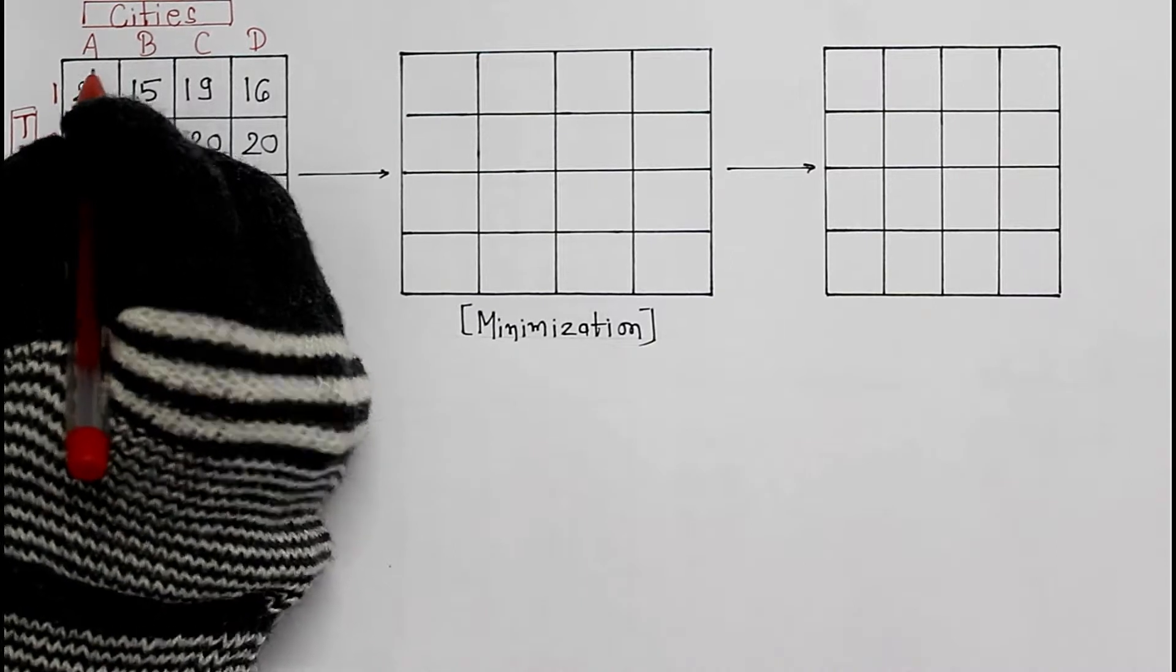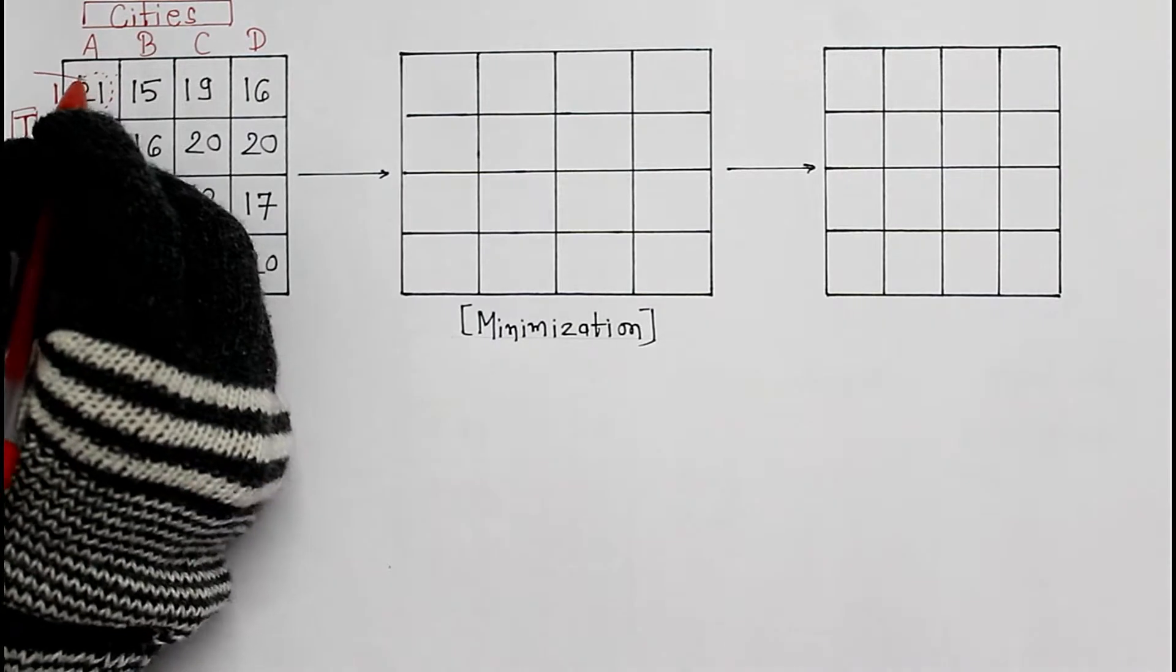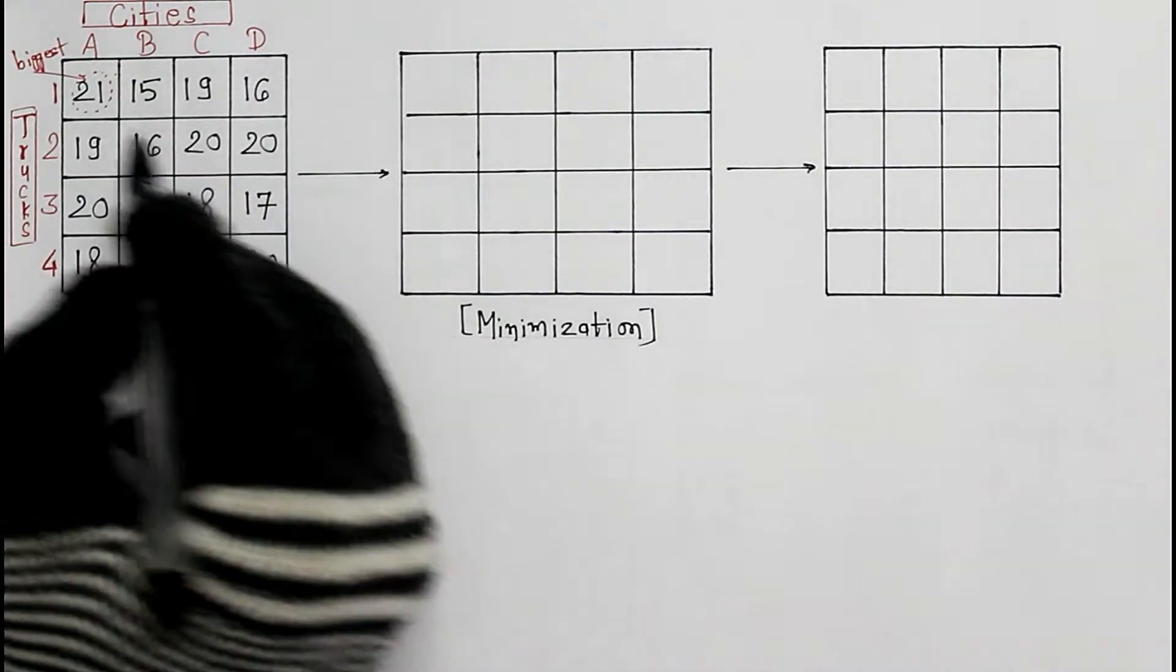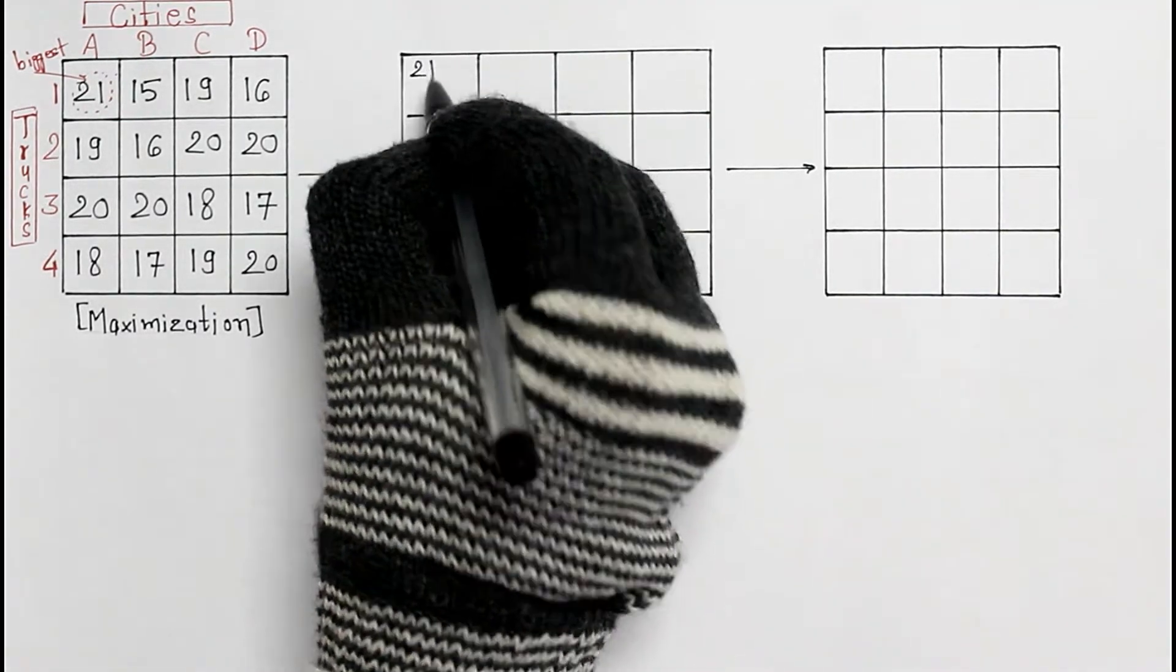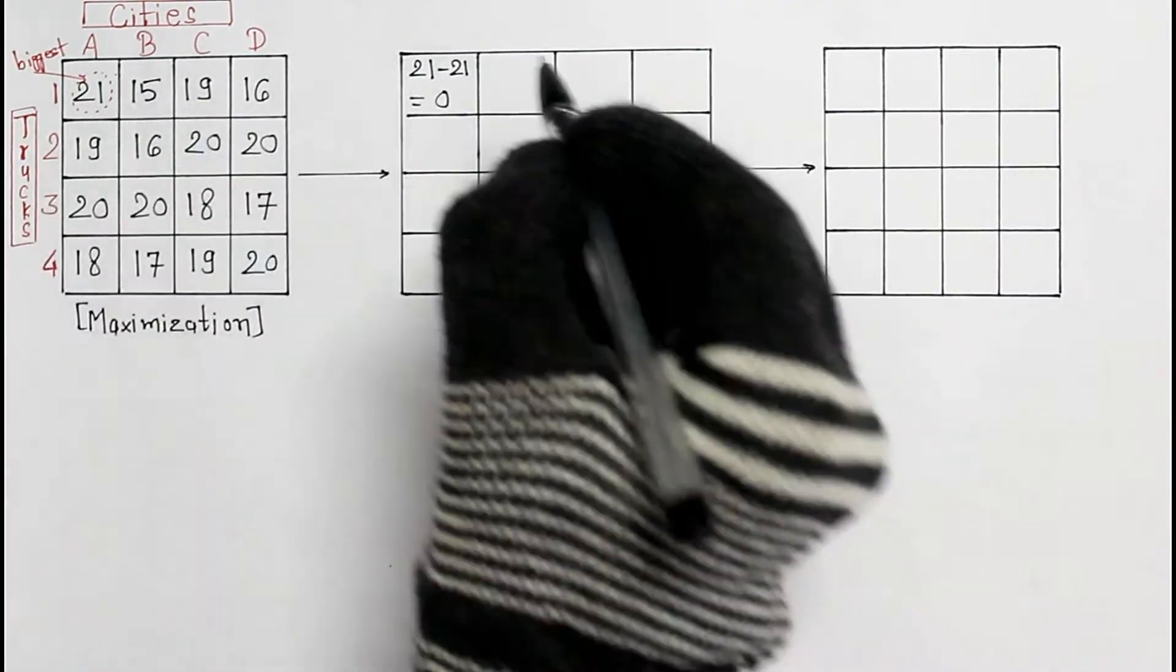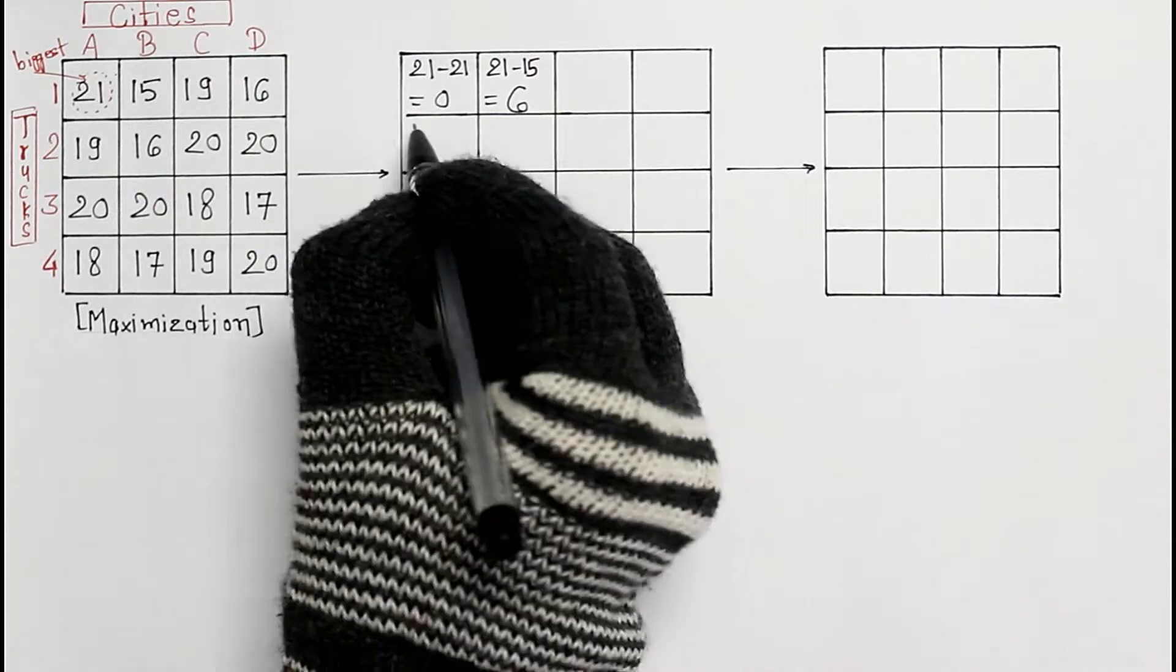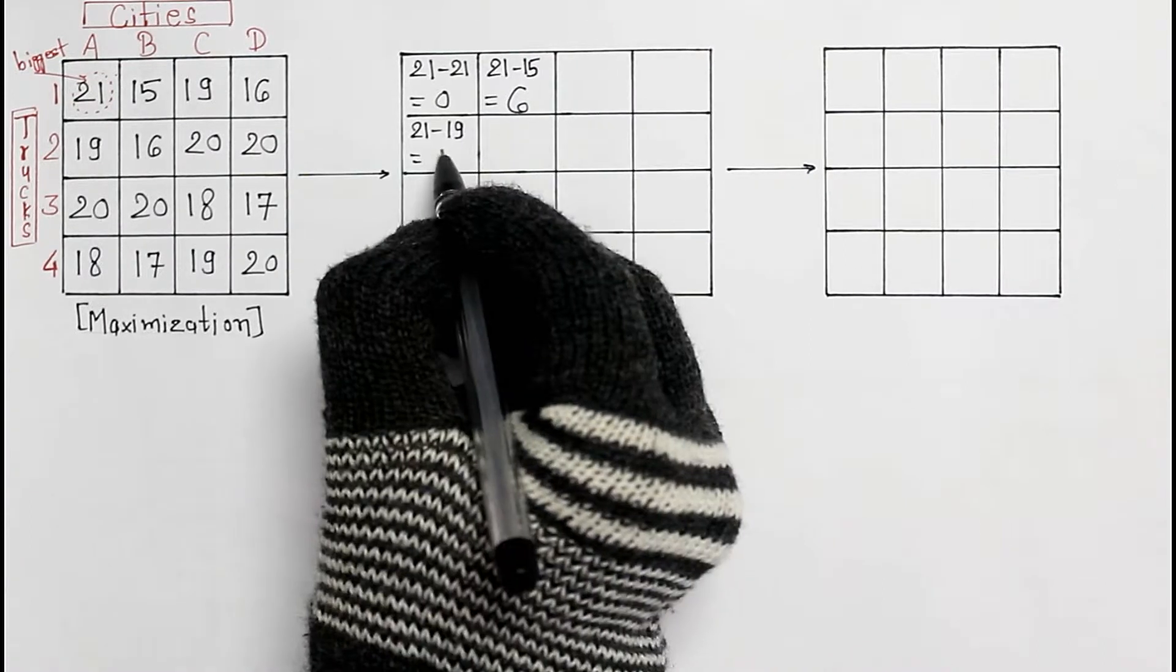21 is the biggest element, and we are going to subtract each and every element from 21. In this cell, 21 minus 21 itself, 0. Here, 21 minus 15, 6. Here, 21 minus 19, 2.